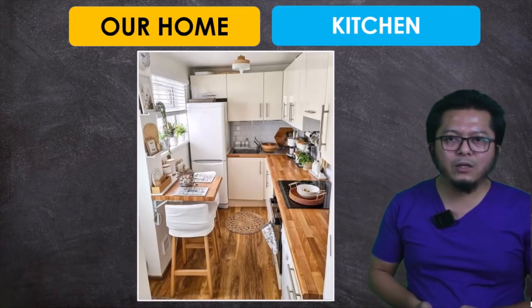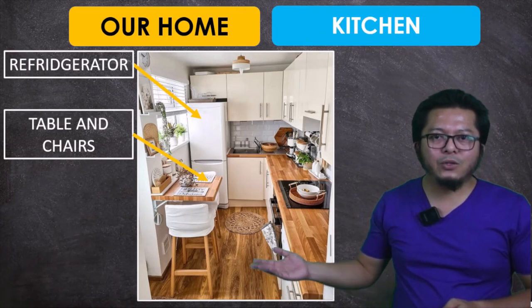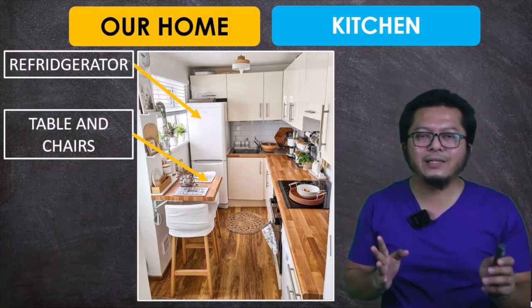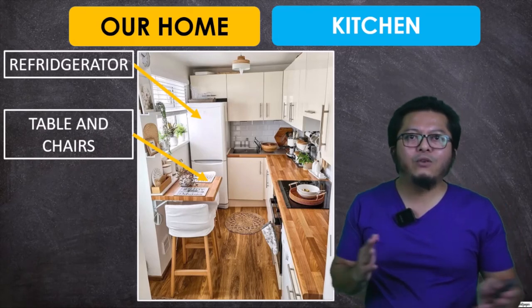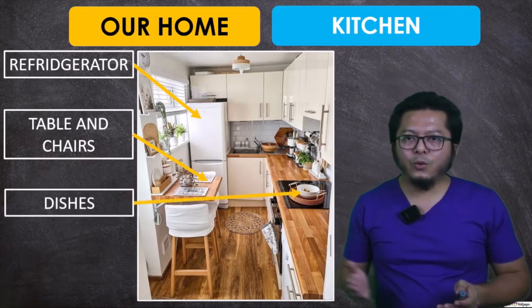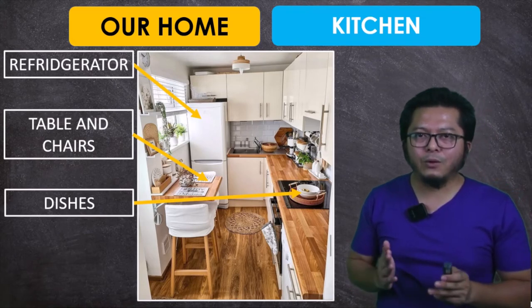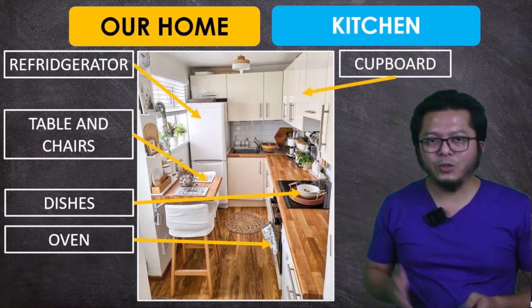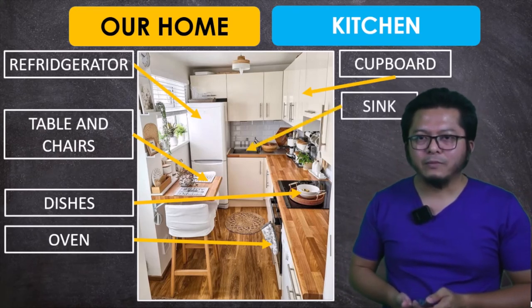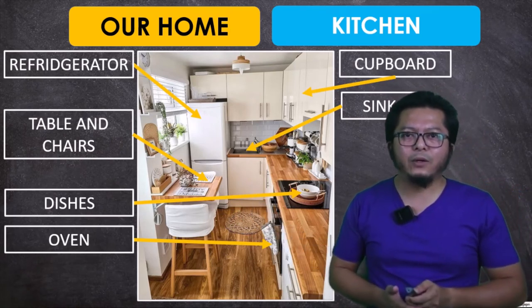Moving on to another room — the kitchen. This is a small kitchen; yours might be bigger. In a kitchen we have a refrigerator, a table and chairs — though sometimes you don't if the kitchen is small or you have a separate dining room. We usually have dishes — pinggan mangkuk — in the kitchen. We also have an oven, a cupboard, and a sink.